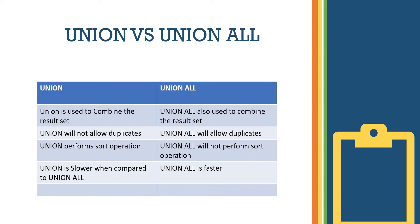The sort operation is similar to an ORDER BY. Because of this sorting, Union is slower compared to Union All. Union All is faster. So the next question is: which one is more performance efficient? Union All is the best choice because sorting is time-consuming.